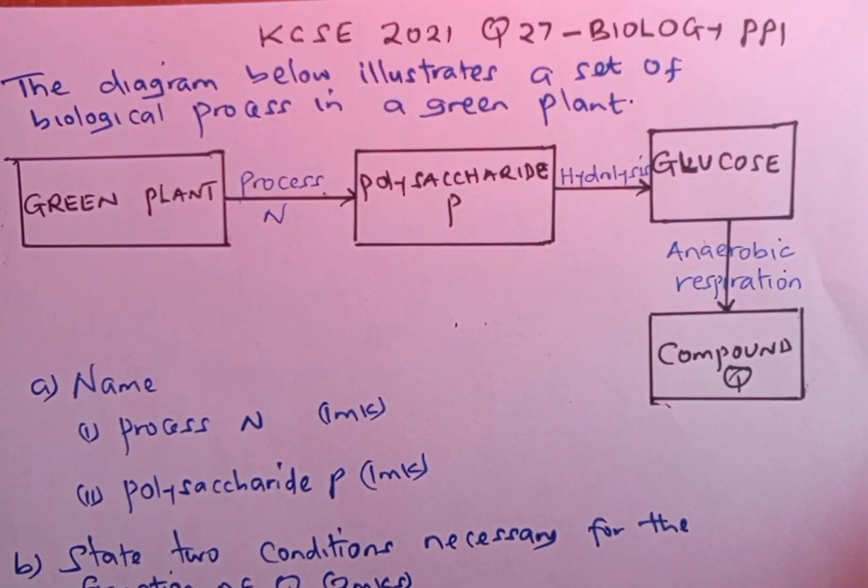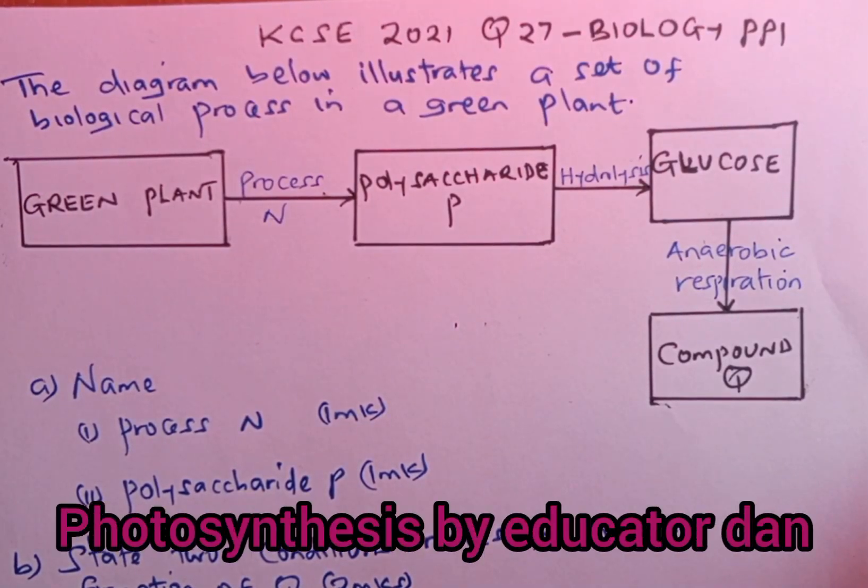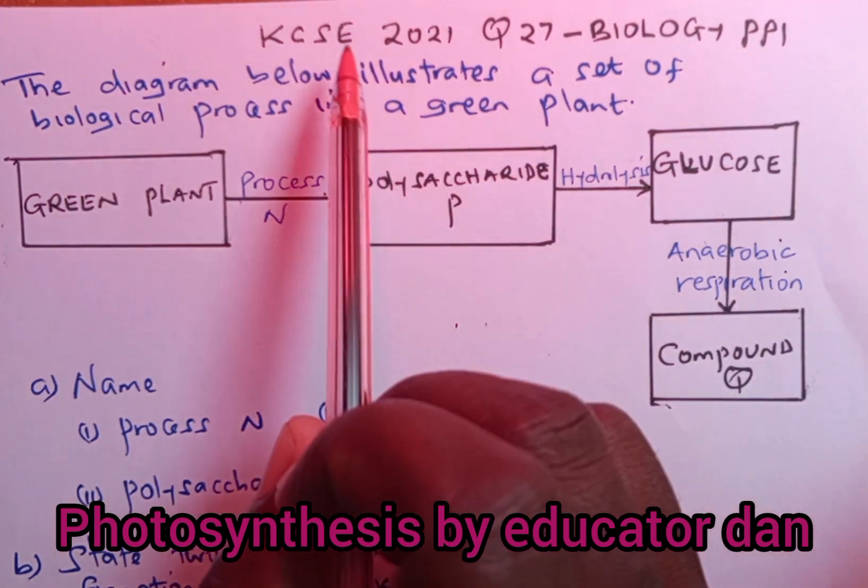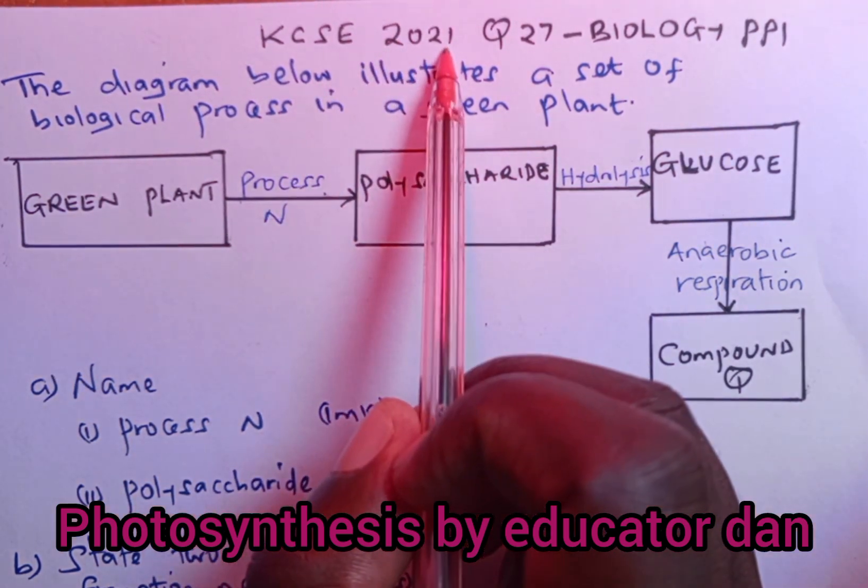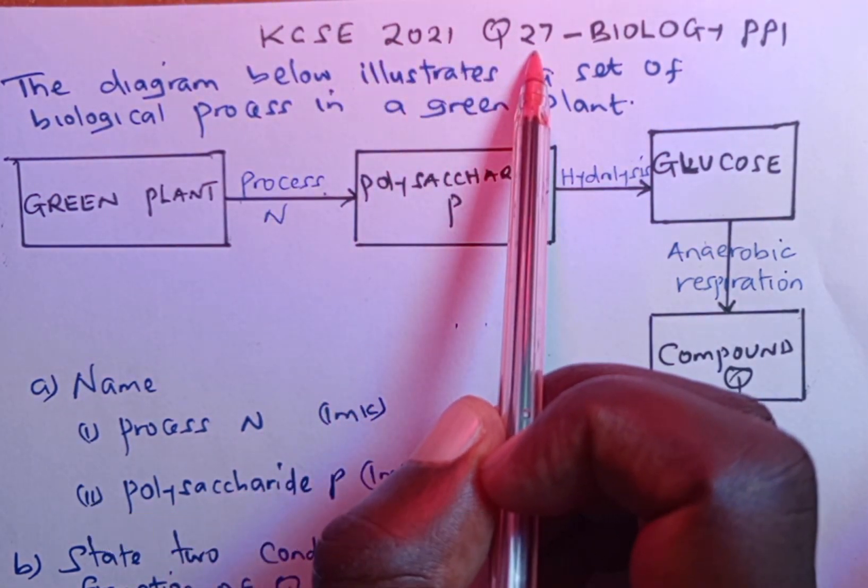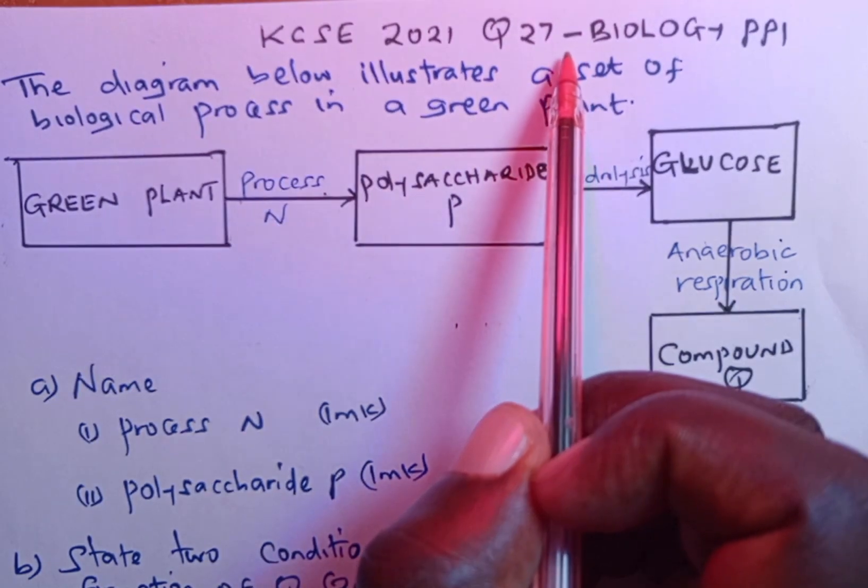Welcome once again to our discussion today. We are looking at KCSE 2021, question number 27, biology paper 1.